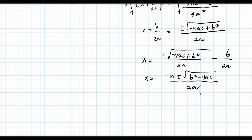So that's it. I hope you learned something about how to derive the quadratic formula by doing the process of completing the square, given the quadratic equation ax squared plus bx plus c equals 0. Please join us in our future math tutorials.